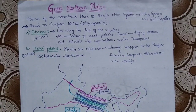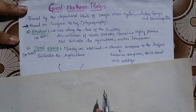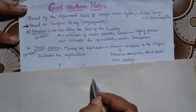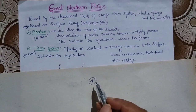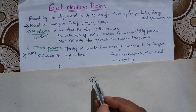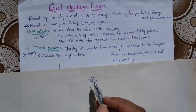Hey everyone, welcome to Silver Index. This is Pujita. This is our fourth video and we are talking about physical features of India. In our last video we completed Himalayas and Northern Plains.